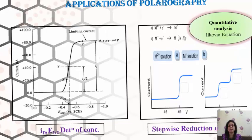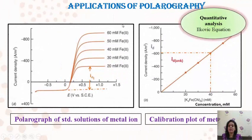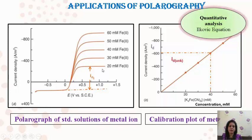You can apply polarography to find out the concentration of an unknown metal ionic solution. For that, you need to prepare the same metal ion solution with known concentrations. You carry out the polarogram study — apply voltage and find out the Id current for different known concentrations of the same metal ion. Once you find out Id current for different concentrations, you form a calibration plot of Id versus concentration. For the unknown solution, whatever the Id value is, you can find out the concentration from this graph.